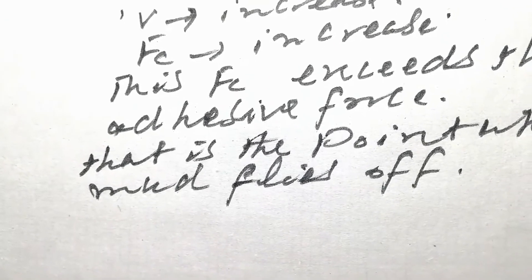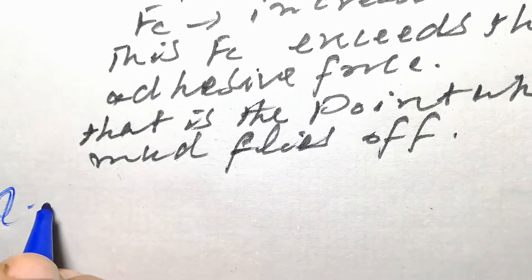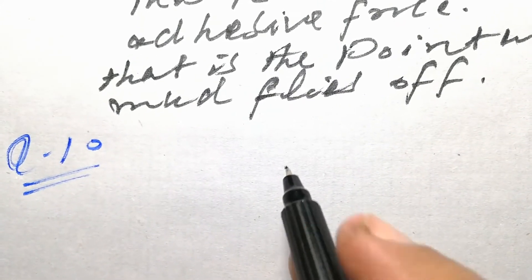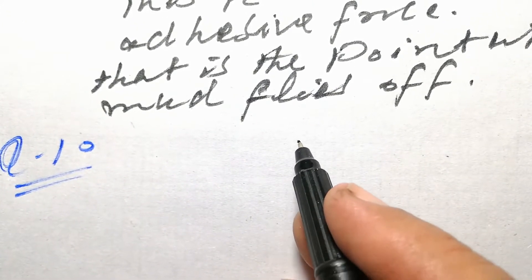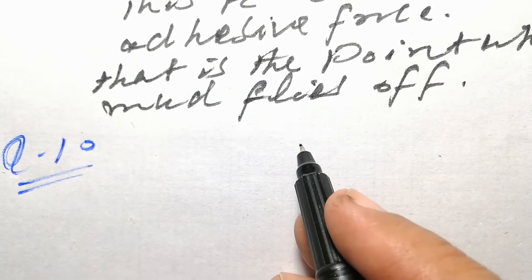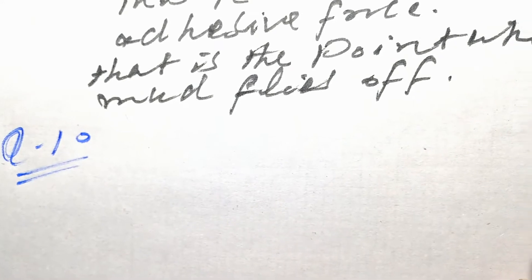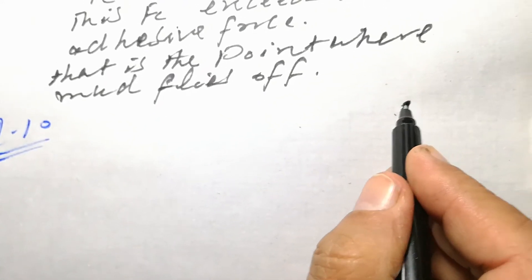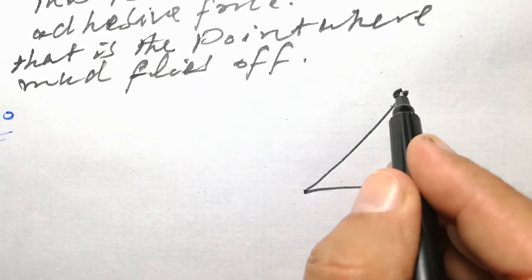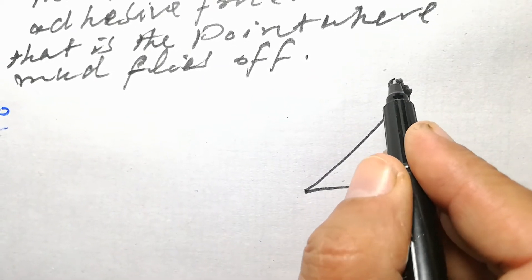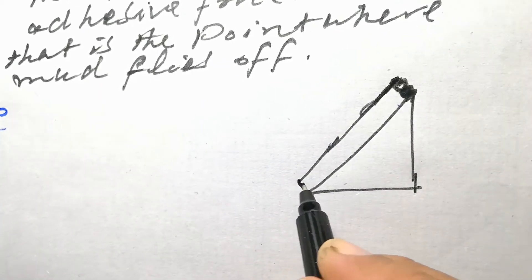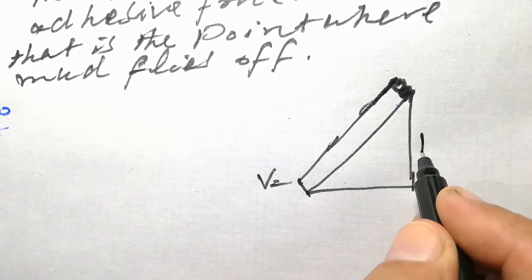Now we have question number 10. A disk and hoop start moving down from the top of an inclined plane at the same time — which one will be moving faster on reaching the bottom? Let's compare: disk versus hoop — which reaches the bottom first?